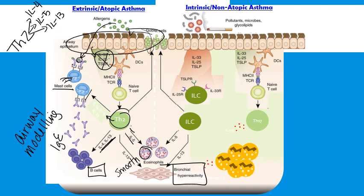With intrinsic and non-atopic asthma, it gets more difficult to figure out because we can't always identify a specific trigger. This form of asthma is not dependent on Th2 or IgE responses. The airway epithelium gets perturbed, and cytokines — IL-33, IL-25, and TSLP — come out of these epithelial cells. These cytokines are bound by innate lymphoid cells, which are recently discovered inflammatory cells that are not antigen-specific but react to the inflammatory environment. They produce a lot of IL-5 and IL-13 — the IL-5 inducing eosinophilia, and the IL-13 supporting bronchial hyperreactivity.